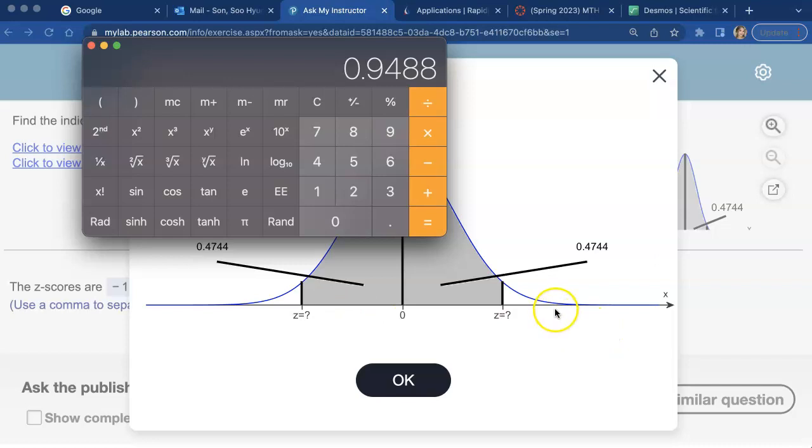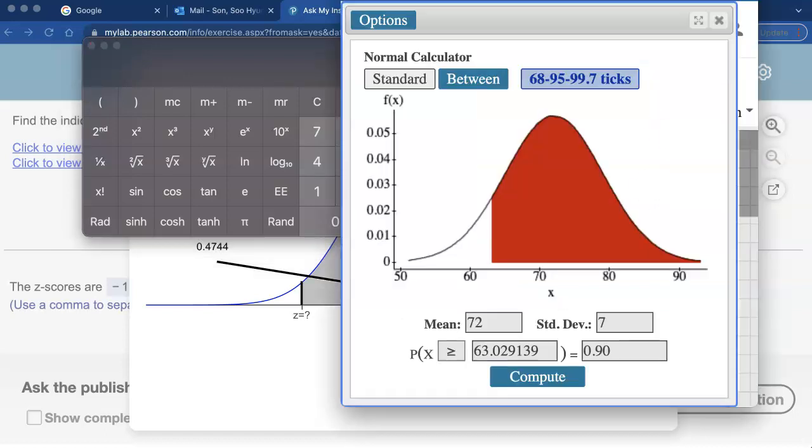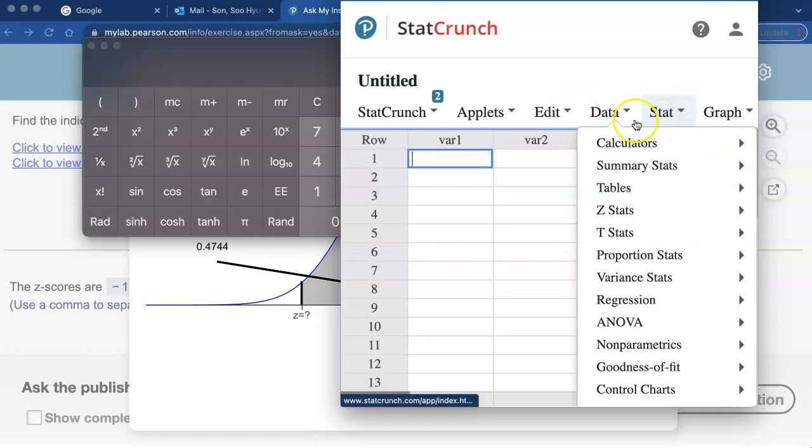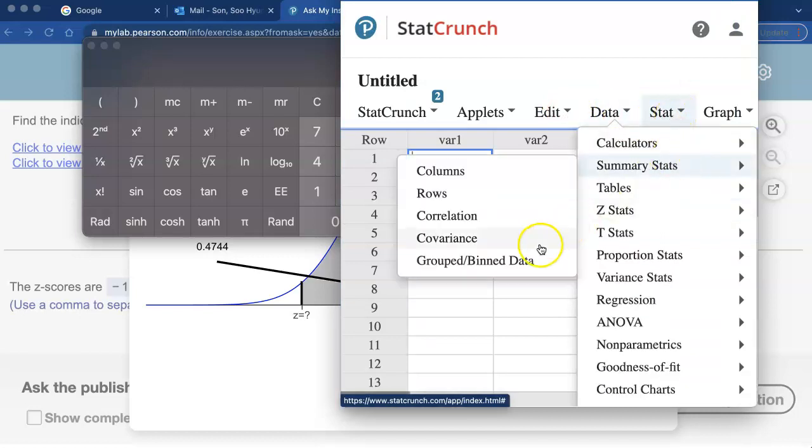The z-scores that have that much area included in the middle. Now you can use the between calculator backward. I have a calculator open. You can open it up by doing stat calculator and normal calculator, and click on between calculator.